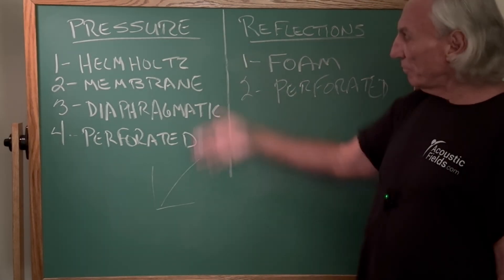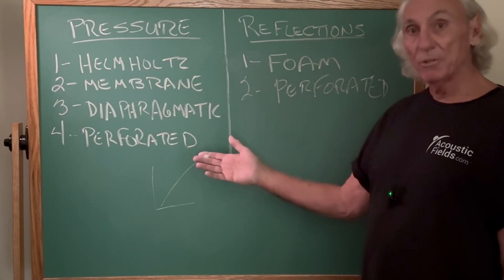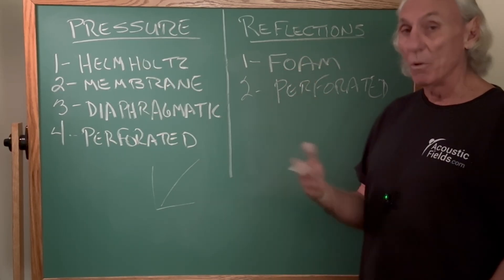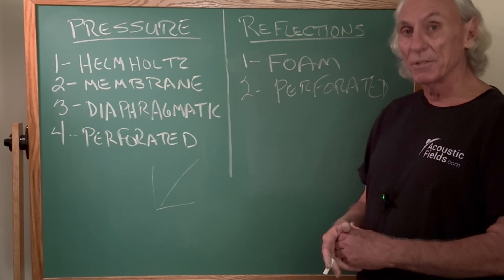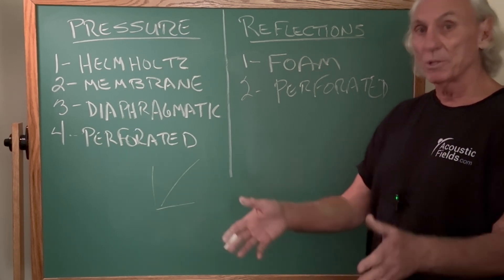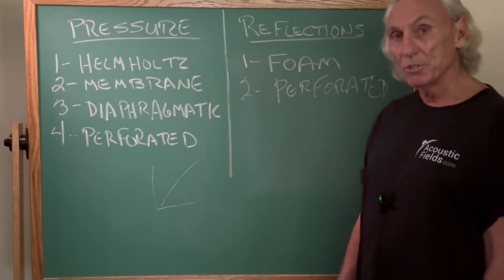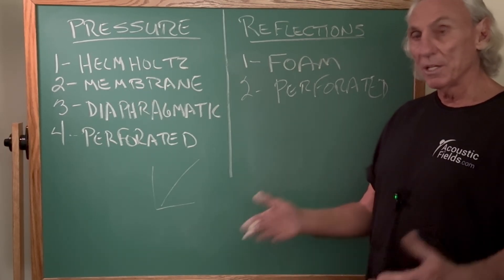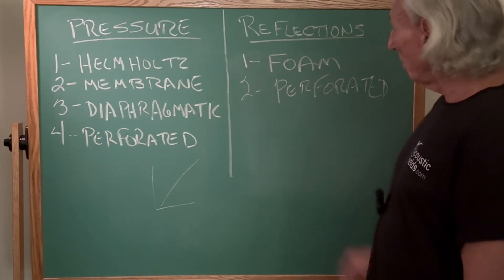So these are our four types of treatment for pressure. And reflection, we have foam. That's an open cell foam technology versus closed cell, which is what you're sitting on in your chair or your couch. That's closed cell, it's more for support, rigidity and stuff like that.